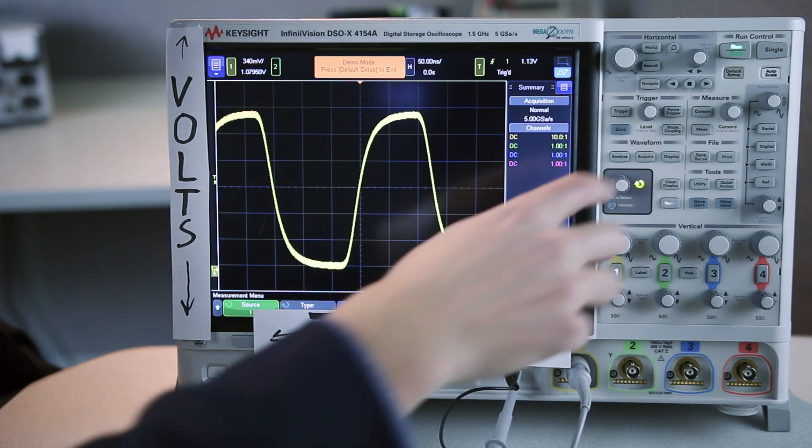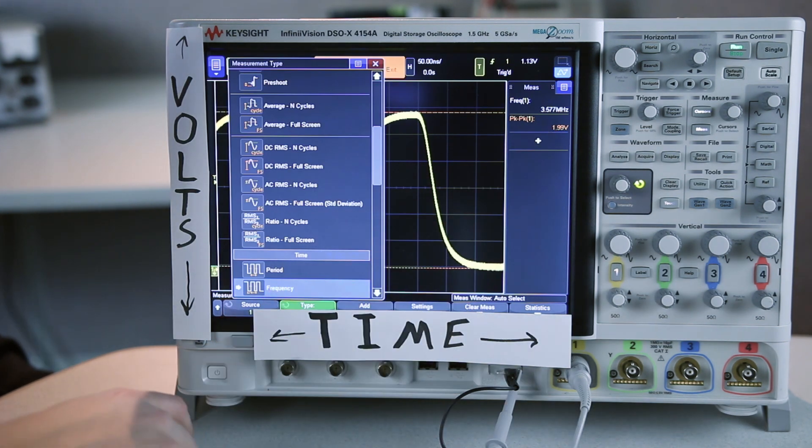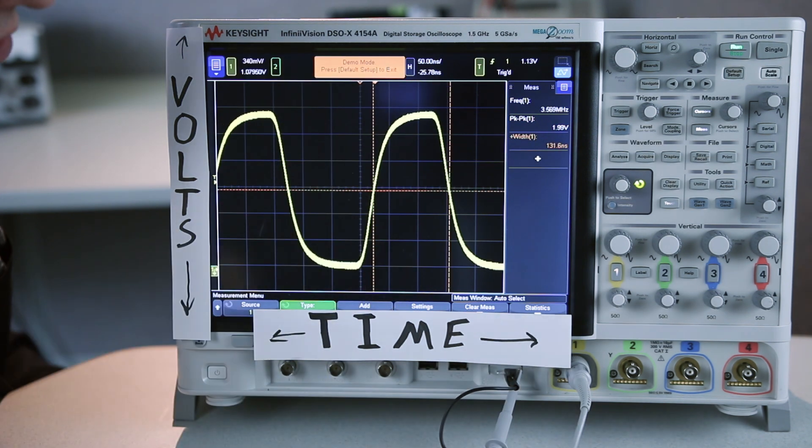So to make a measurement, all I have to do is hit the measurement button. If I want to see another measurement, for example, the pulse width, I can hit this plus button here and select the pulse width measurement. And now I have a pulse width value shown in my measurement sidebar.